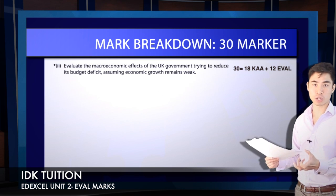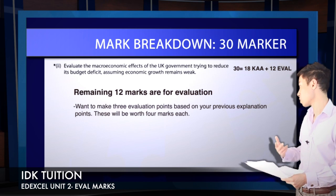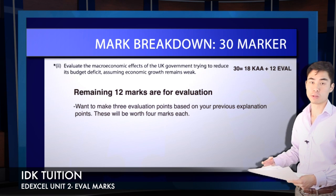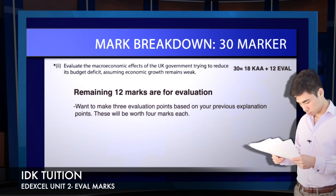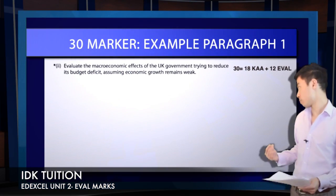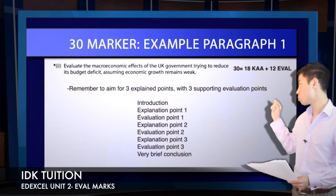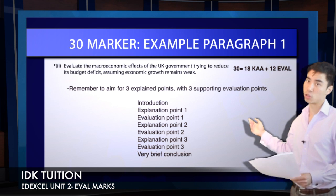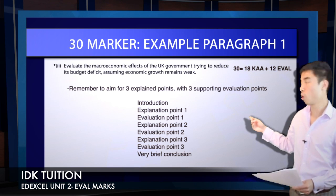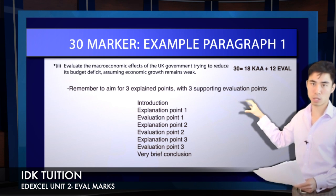Looking at the 12 evaluation marks, it's a similar mark allocation to your explanation points — you want to make three good evaluation points for four marks each. Your essay should read: introduction, then explanation followed by evaluation, explanation followed by evaluation, and explanation followed by evaluation for the final paragraph. You're making three evaluated points for essentially eight marks each — combining your four marks for explanation and four marks for evaluation for each point.